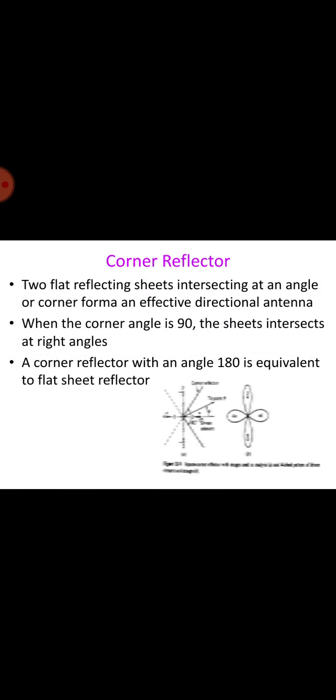For the design of the corner reflector, two flat reflecting sheets intersecting at an angle or corner forms this antenna. When the corner angle is 90 degrees, the sheets intersect at right angles forming a square corner reflector. Corner angles both greater than and less than 90 degrees can be used, although there are practical disadvantages of an angle much less than 90 degrees.